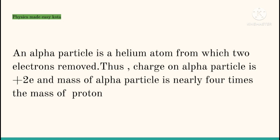So, the question arises, what is an alpha particle? An alpha particle, also denoted by He raised to power 2 positive, is a helium atom from which two electron strains are removed. Thus, charge on alpha particle is plus 2E and mass of alpha particle is nearly four times the mass of the proton.